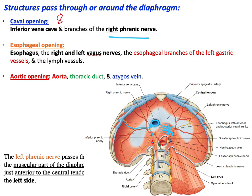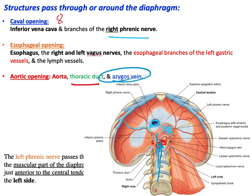For the aortic opening at T12, the structures passing through include the aorta, the thoracic duct — a major lymphatic duct that drains lymph from the abdomen — and sometimes the azygos vein. The azygos vein forms in the abdomen and sometimes ascends through the aortic opening, ultimately draining into the superior vena cava. On the left side you have the hemiazygos vein instead.